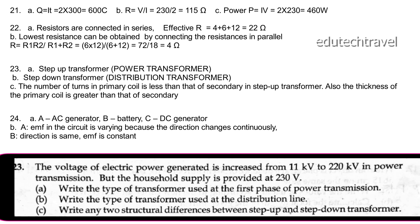Question 23: The voltage of an electric power generator is increased from 12 kV to 220 kV in power transmission, but household supply is provided at 230 V. The transformer used at the first phase is a step-up transformer. The transformer used at the distribution line is a step-down transformer. In a step-up transformer, the number of turns in the primary is less than that of the secondary, and the thickness of the primary coil is greater than that of the secondary.